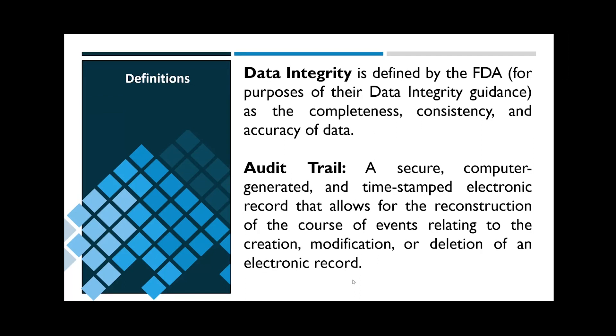We'll dive into an overview in a moment, but first I want to define a few more relevant terms. The first one is audit trail. An audit trail is a secure, computer-generated, time-stamped electronic record that allows for the reconstruction of the course of events relating to the creation, modification, or deletion of an electronic record. If I look at an audit trail, I should know who specifically performed the action that generated the record, what the record is — for example, a setpoint change from 37 to 36 degrees Celsius — when the record was generated, and what unit op, say a single-use bioreactor, the change occurred on. Many systems allow for the operator to leave a comment explaining the change, and that's our why.